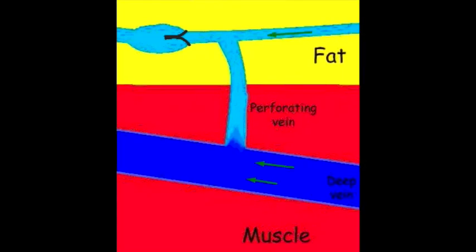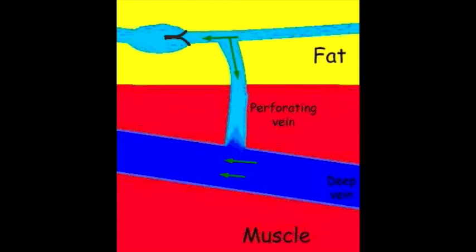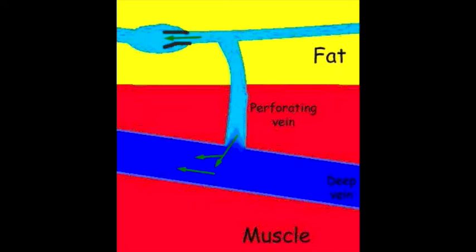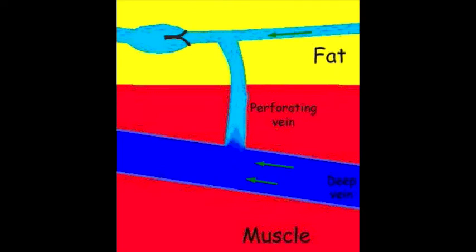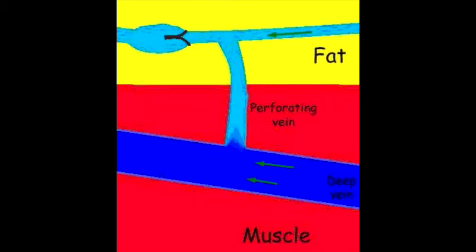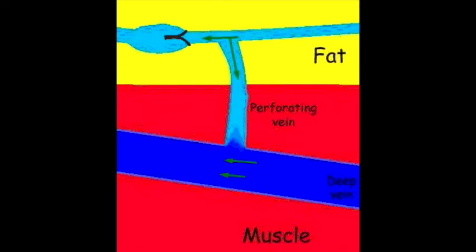This animation shows the normal perforator vein. In light blue is blood flowing in the superficial veins, for example the great saphenous vein. Notice that blood flow is from right to left going upwards towards the heart, but blood does not dip down through the perforator vein into the deeper vein, which is shown in darker blue.